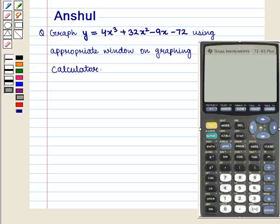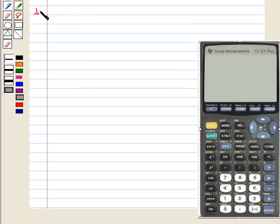Hello and welcome to the session. In this session we are going to discuss the following question: graph y equals 4x cubed plus 32x squared minus 9x minus 72 using appropriate window on graphing calculator. Now let us start with the solution of the given question.